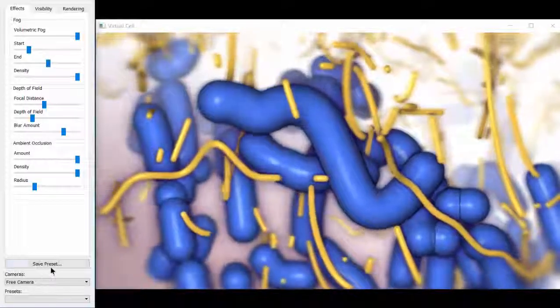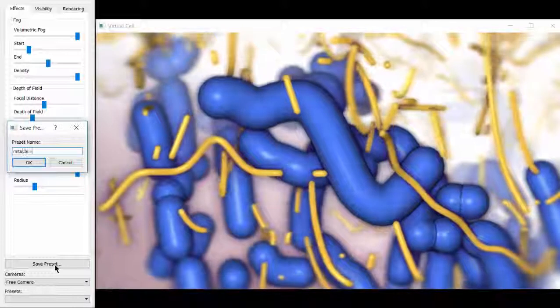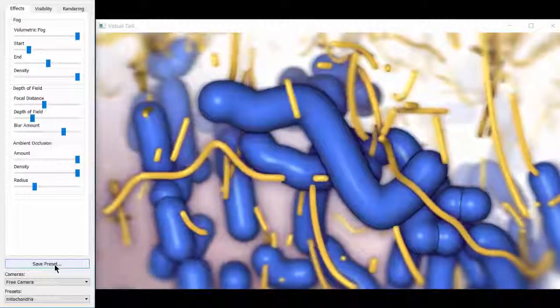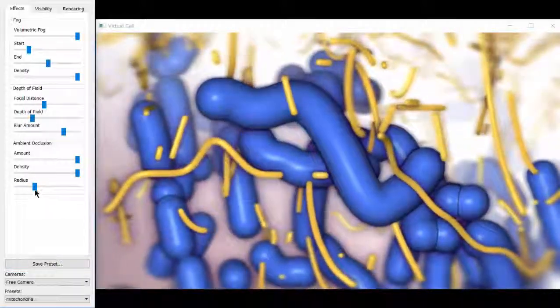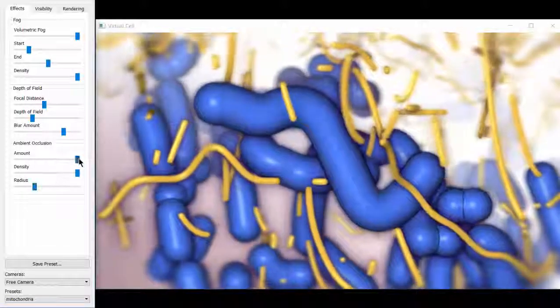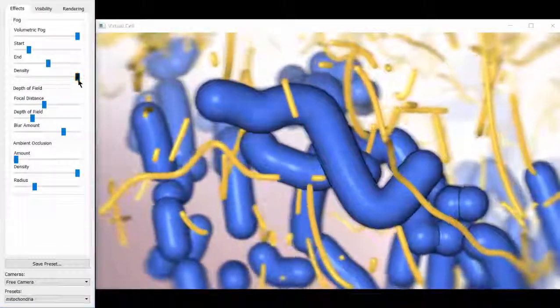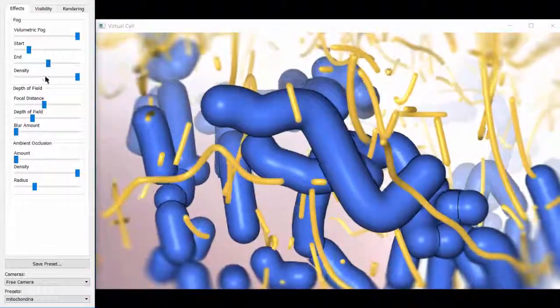Once the user is happy with the settings, she can store them into a so-called preset. All the saved presets are displayed in a drop-down list on the bottom of the editor window. Then, the user can continue creating other presets.